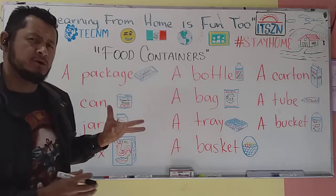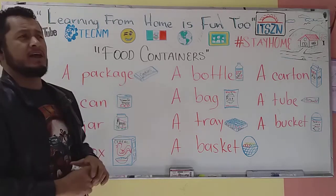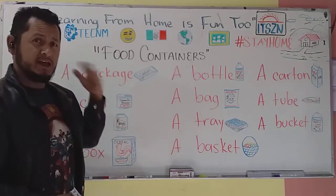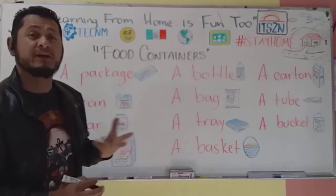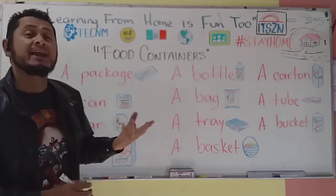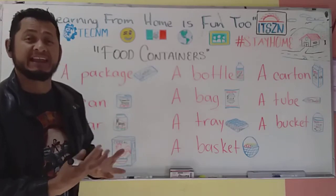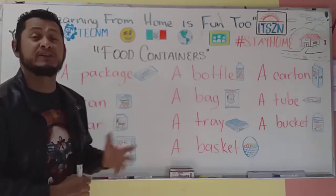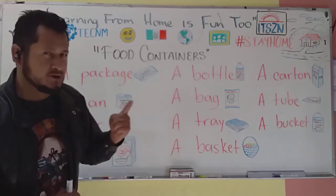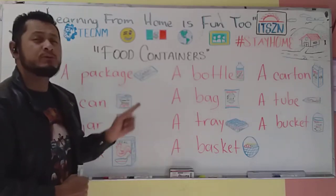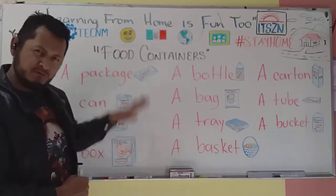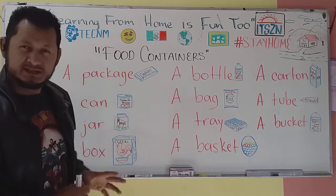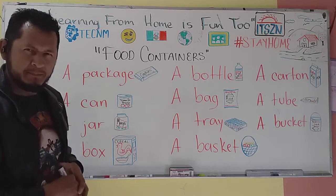Now, if you go to the store, the shelves are the aisles — son los pasillos y los estantes donde we can find food. And the food cans, packaged — viene empaquetada in many different ways, with different products or different types of food containers. We're going to see a few of them as examples. These are the most common — son los más comunes que viene la comida empaquetada.